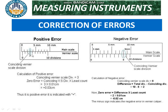There is a method to correct these errors using certain techniques. When we face a positive error (zero error), we check the coinciding division on the Vernier scale. We identify which division coincides with the main scale — in this case it is the third division.